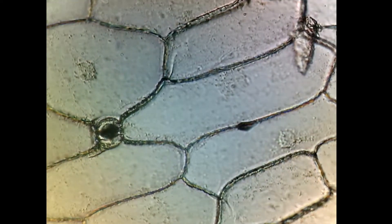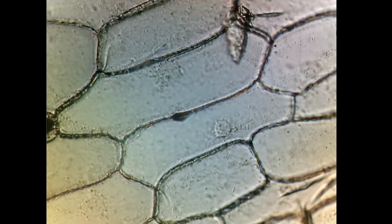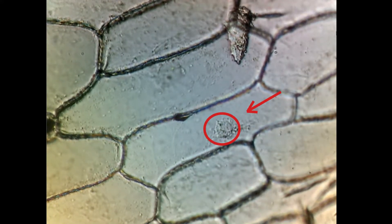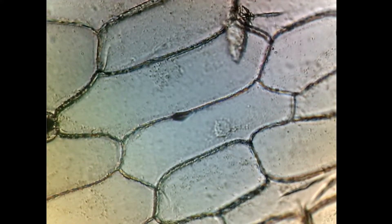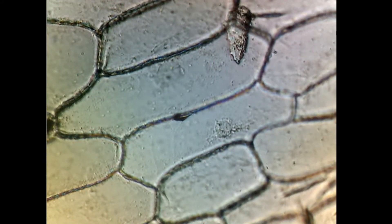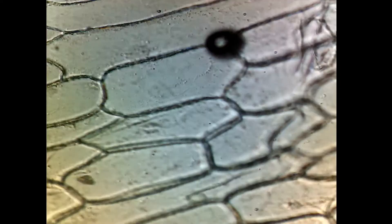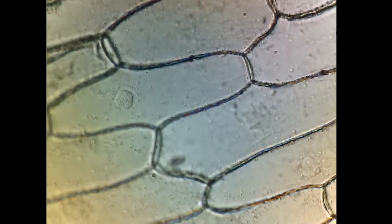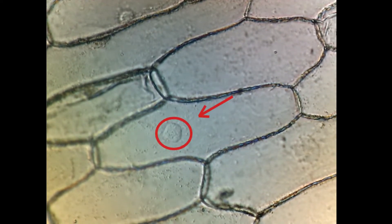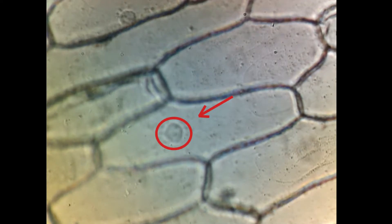Here you can see the individual cells. Nucleus. Here you can clearly see the nucleus of the onion cell.